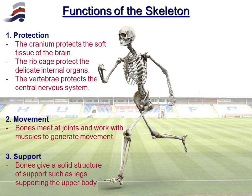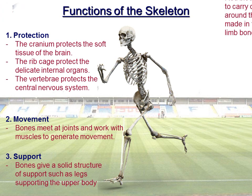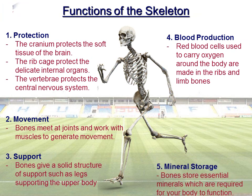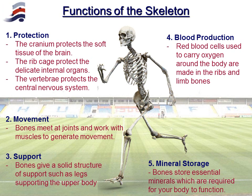Support: the skeleton gives us a solid structure, such as the legs supporting the upper body, or the vertebral column supporting the head. Blood cell production: red blood cells, which are used to carry oxygen around the body, are made in something called bone marrow, which is found in the ribs and the limb bones. And lastly, mineral storage: essential minerals that the body requires are stored in different bones around the body.